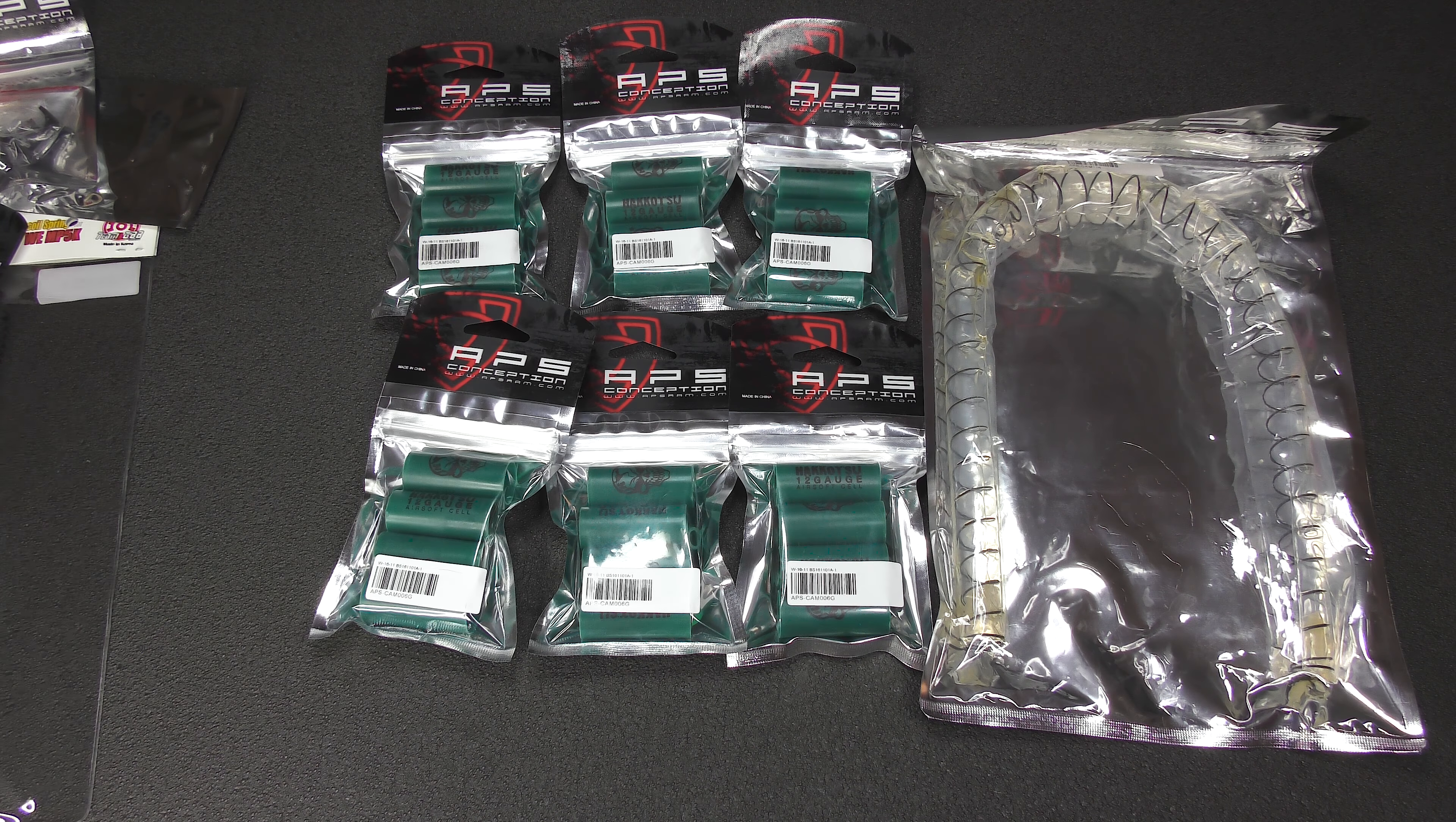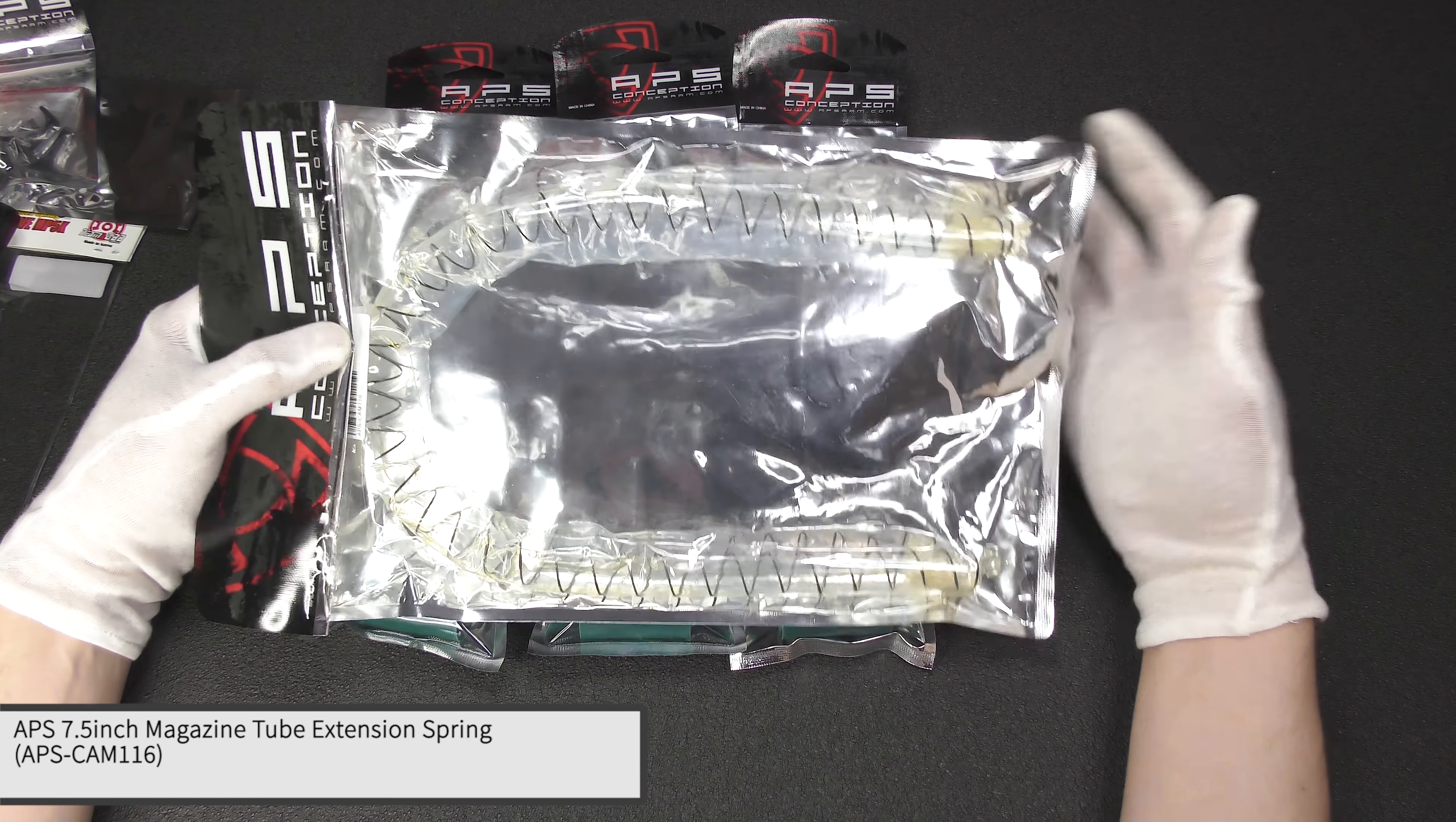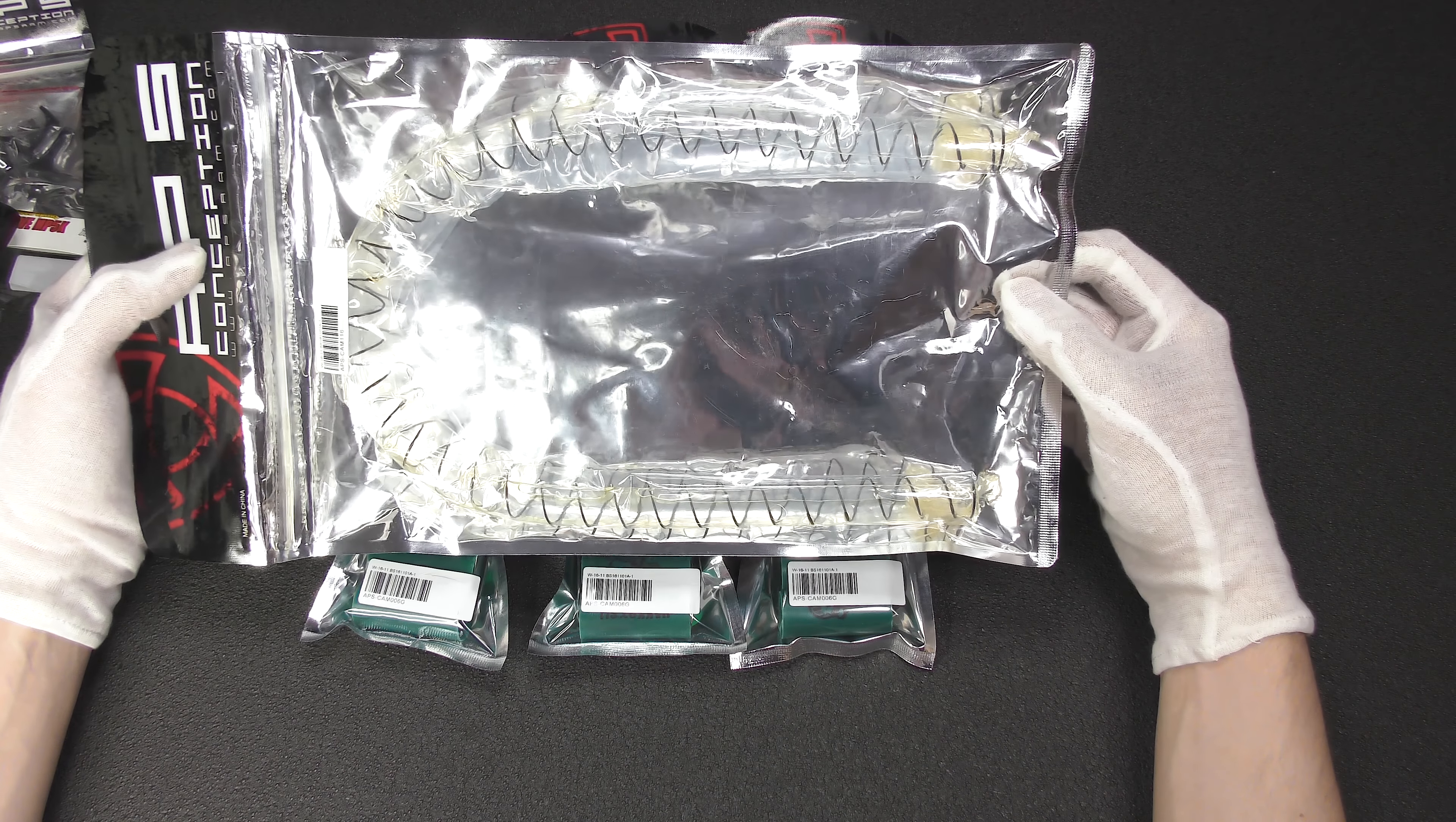Starting off with this, at least interesting, this is I believe a 7.5 inch extension spring. I don't really need this particular one, but for my shorty APS CAM 870, I currently have a real steel Remington spring that I've cut to length. I'm thinking it's probably better for the gun to use an APS spring, so that's why I got this.